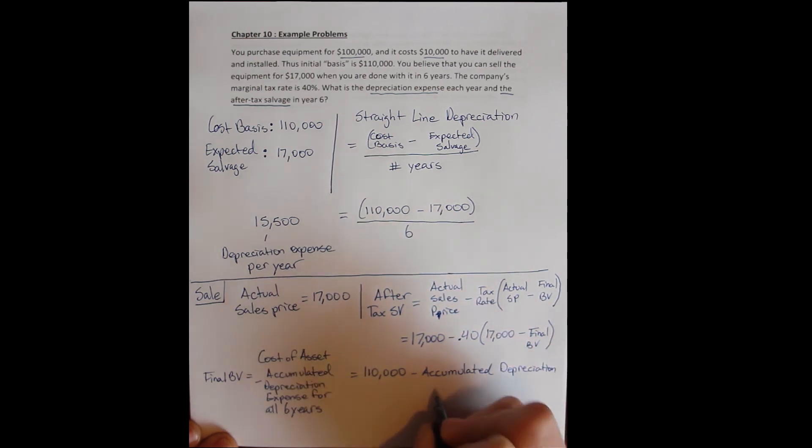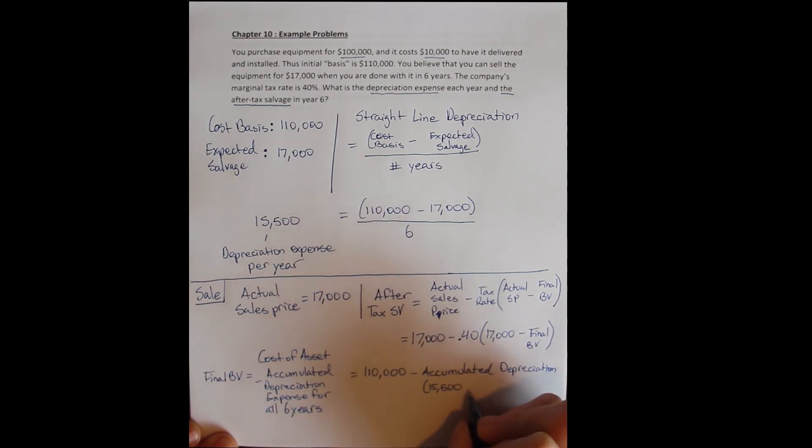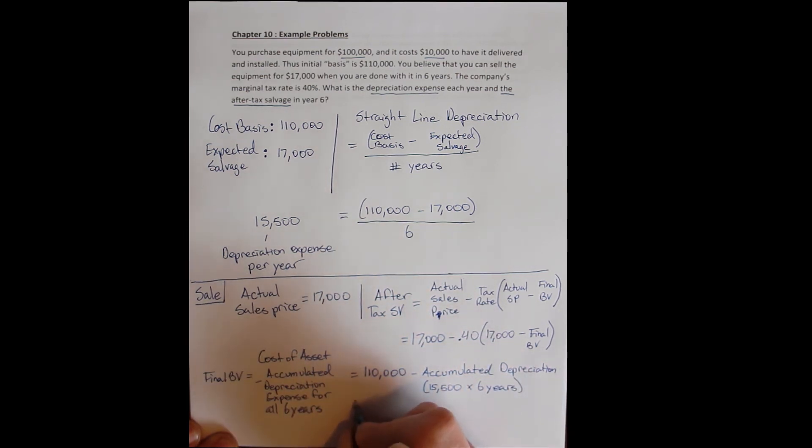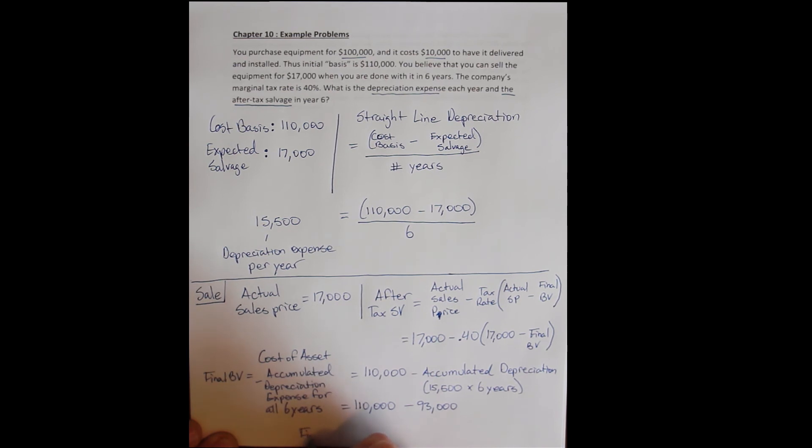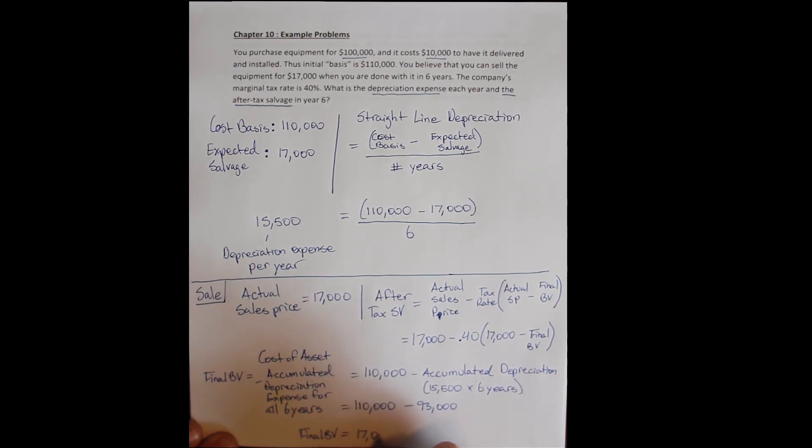And all that means is six years of $15,500. That's what accumulated means. All of the depreciation. So $15,500 every year. I did that depreciation for six years. And so I end up with $110,000 minus $93,000 of accumulated depreciation. And I get a final book value of $17,000.